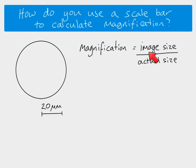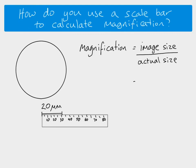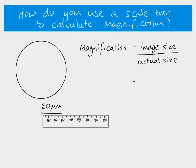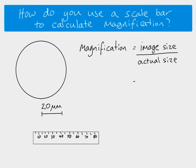So we already know the actual size of the scale bar. All we need to do is measure it to get the image size. Taking a ruler and measuring the length, as we'd already seen, it's 30 millimetres — you'd want to be as precise as possible, so it might actually be closer to 31 millimetres, but we'll use 30 to keep it simple. So measuring the scale bar gives us an image size of 30 millimetres, and we're told the actual size is 20 micrometers. We now know both values needed to calculate magnification.